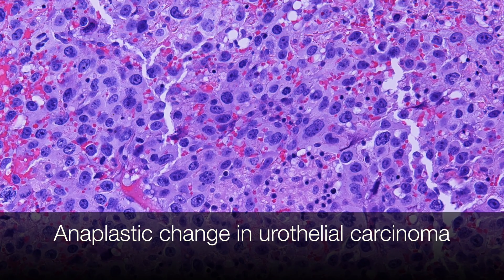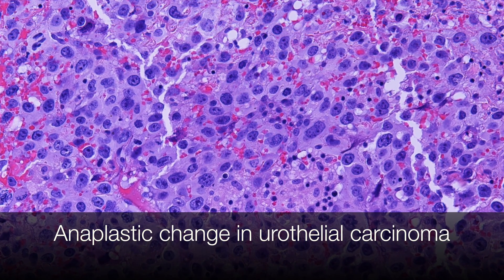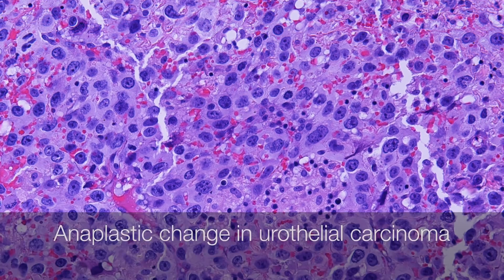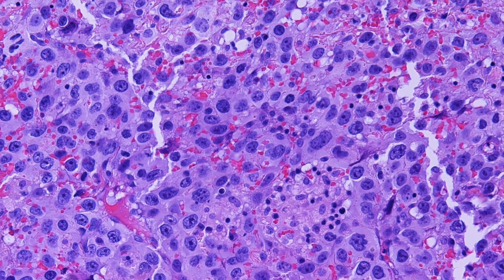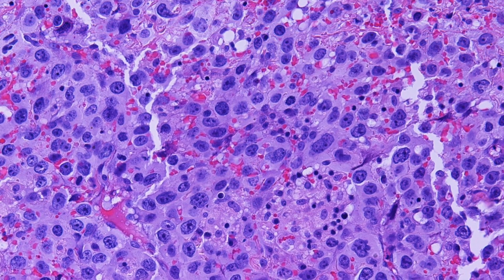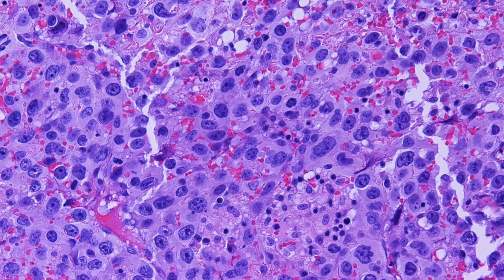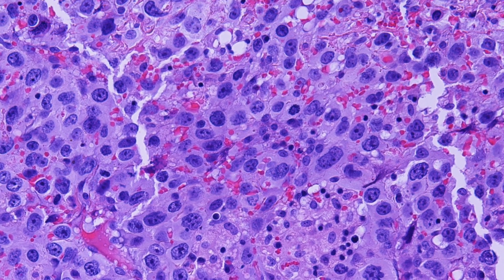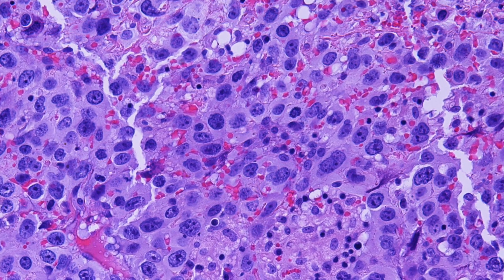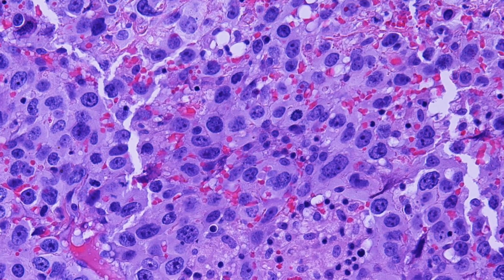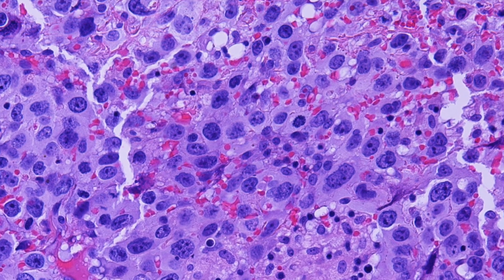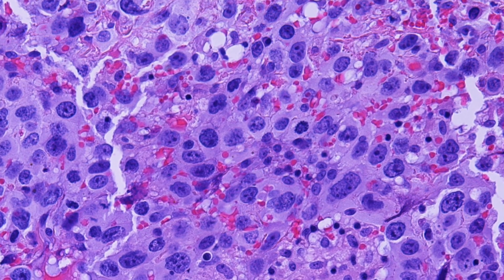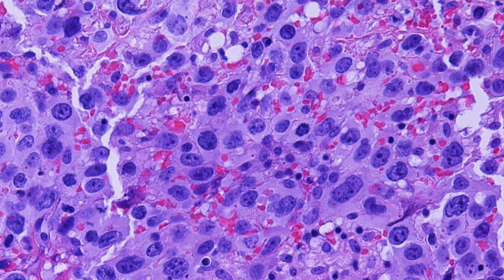This is an example of anaplastic change in a urothelial carcinoma. The malignant cells are undifferentiated and pleomorphic. If we didn't know this was part of a urothelial carcinoma, it would be impossible to say what sort of tumour it is without doing some further studies.